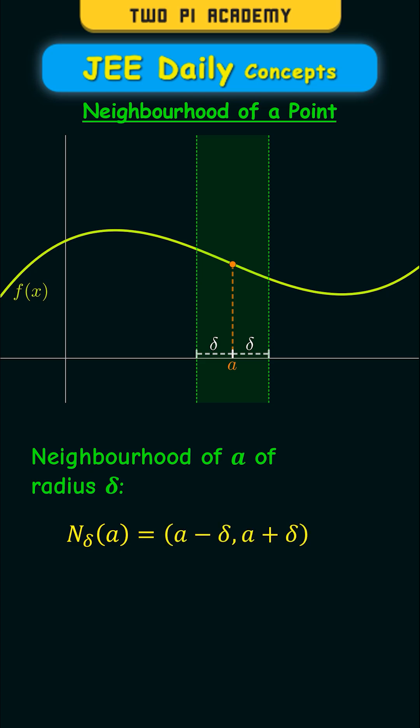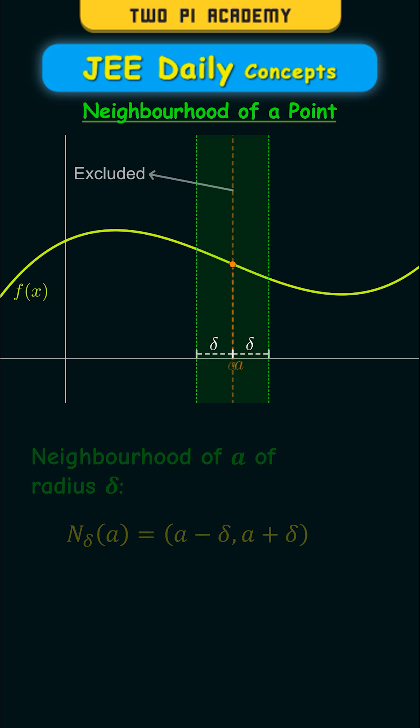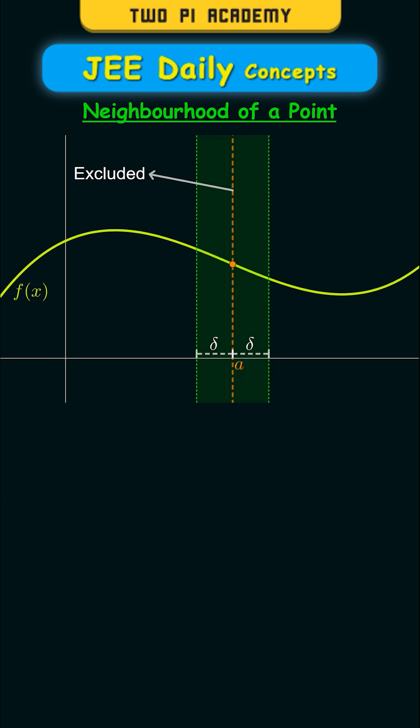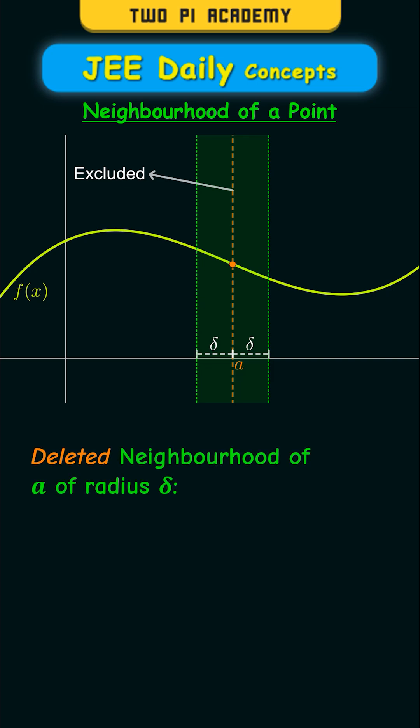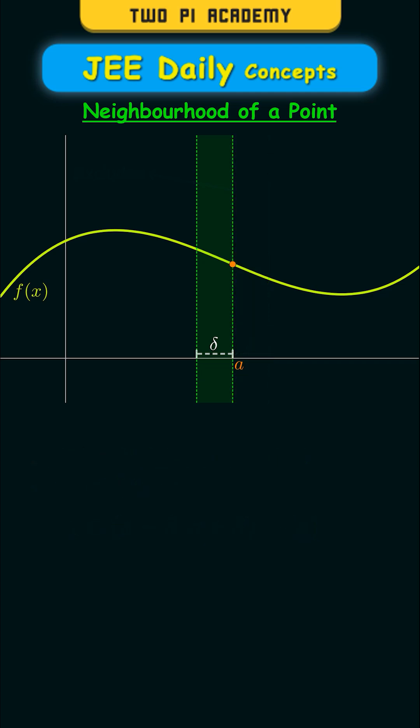If you exclude just the point x equal to a, it is known as the deleted neighborhood of a of radius delta. x belongs to the open interval (a minus delta, a plus delta) minus the set containing a.